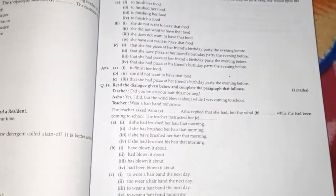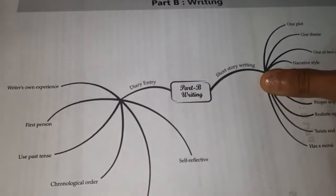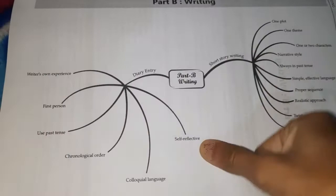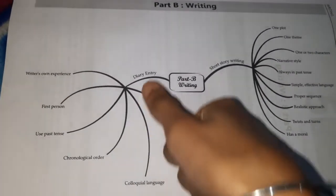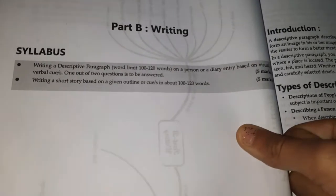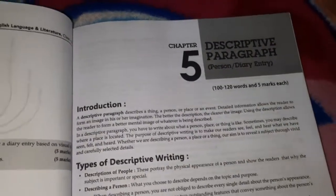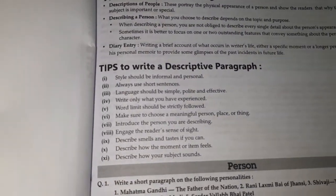Now let me move on. Here is Part B, which is the writing portion. It contains diary entry and story writing, among other things. These are the two main topics of the writing portion. The syllabus includes descriptive paragraph, diary entry, and story writing. They have explained the descriptive paragraph — about a person or a diary entry — you can see here.